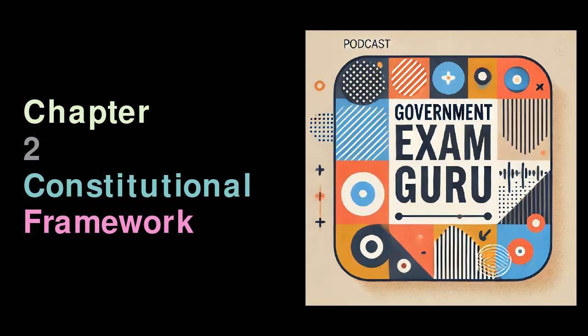After independence, the country needed a constitution to establish the laws and framework for its governance. To create this document, a Constituent Assembly was formed in 1946. Finally, on 26 January 1950, the Constitution of India was officially adopted. The Constitution serves as the foundation of the country's political system, defining the roles and responsibilities of various branches of government and the rights of citizens.